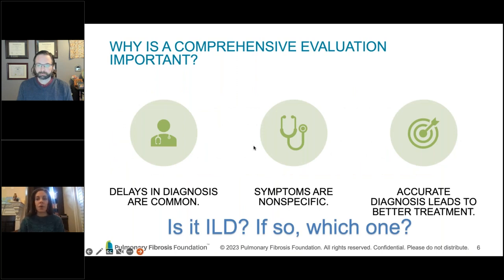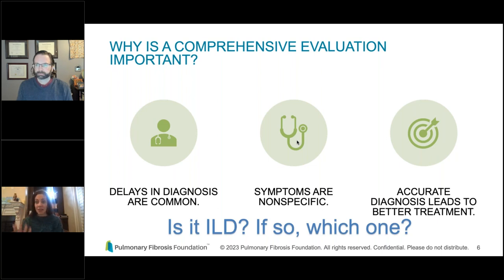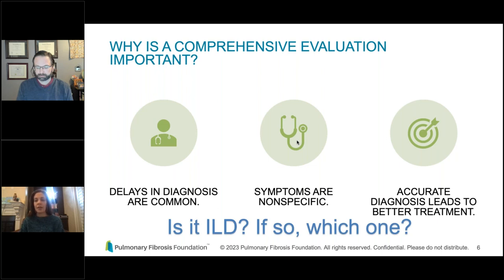The importance of a comprehensive evaluation for interstitial lung disease cannot be overstated. We talk a lot about delays in diagnosis — ILD and pulmonary fibrosis have very nonspecific symptoms that can present in ways that look much like other, far more common disease processes. Doctors are taught: if you hear hoofbeats, think horses, not zebras. So ILD tends to fall lower on the list of possibilities, which can create both delays and misdiagnosis. That's why it's important to make an accurate diagnosis in a timely fashion, because it leads us to offer better treatment.